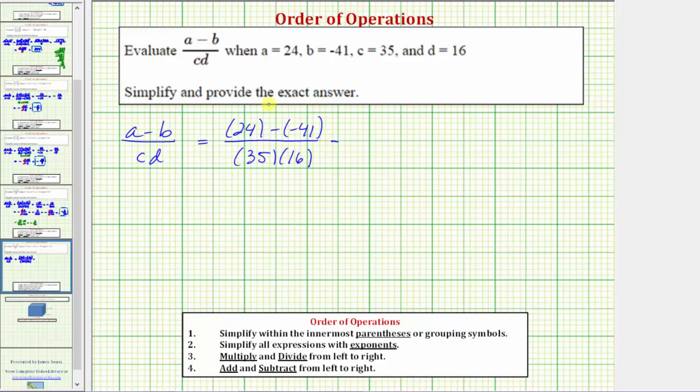When we have an expression in fraction form, we simplify the numerator and denominator separately, then simplify the fraction. In the numerator, we have 24 minus negative 41.